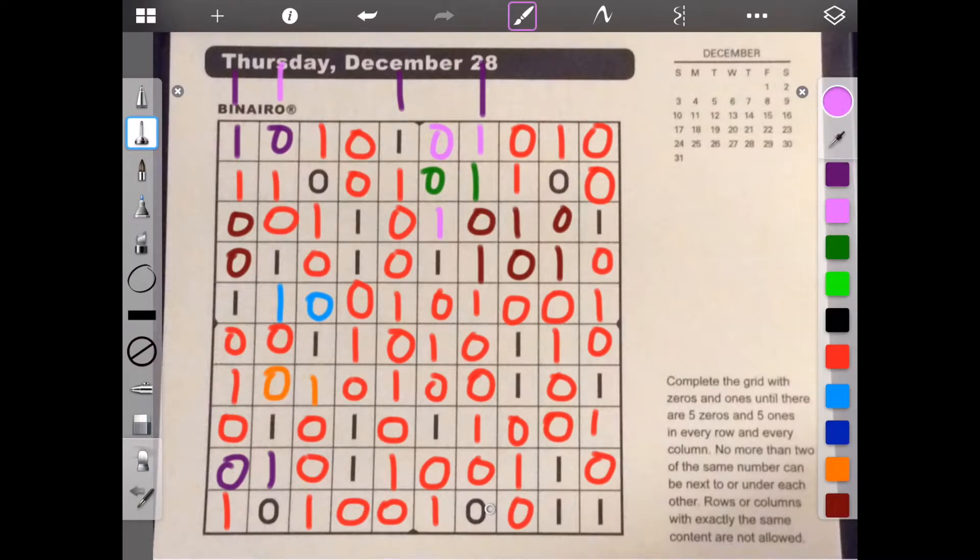Zero, one, zero. No. One, oh, one. No. No, no. Zero, zero, one. Zero, zero, one, zero, one, zero, one. Okay. So zero, zero, one, one, zero, zero, one, one, zero. Okay, that one's okay.